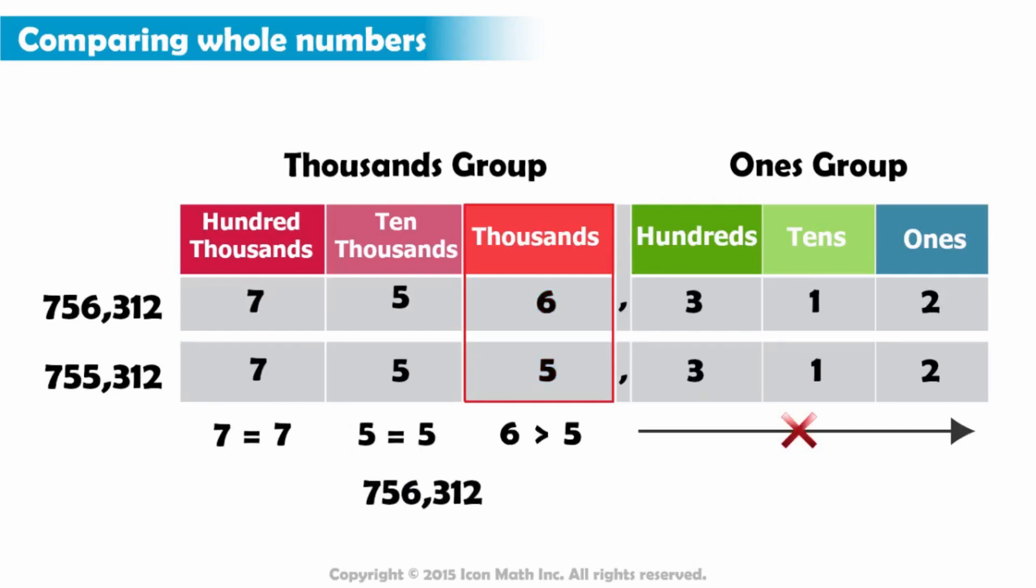Seven hundred fifty-six thousand three hundred twelve is greater than seven hundred fifty-five thousand three hundred twelve. And we write this result using the greater than sign.